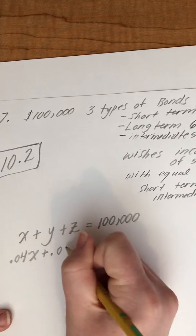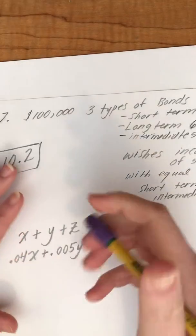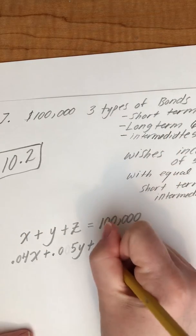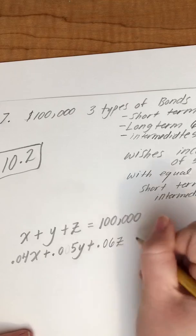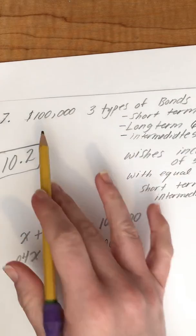plus 0.05Y, oops I put two O's, plus 0.06Z. That's going to equal 5.1% of 100 grand.